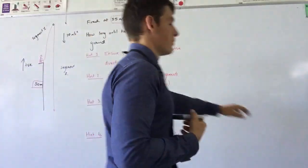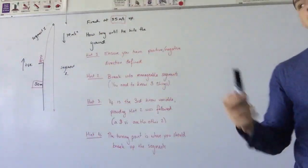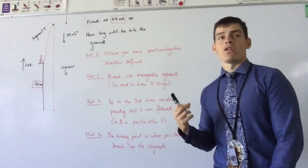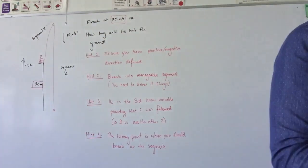So that's hint two: break it up into manageable segments where I know three things. The 50 meters is a trap. So now how many things do I know? Two. So I need to find a third thing, and this is where breaking it up into segments is helpful.